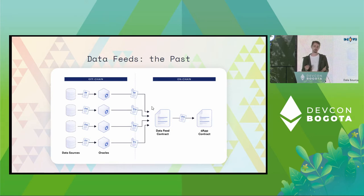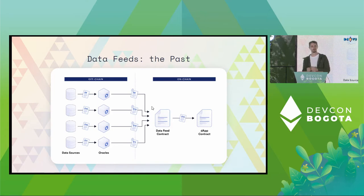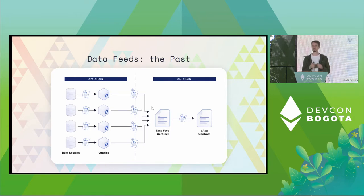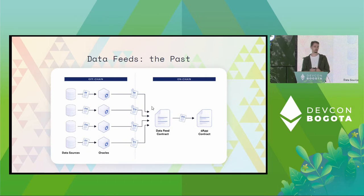If some of the oracles do not send a price, or if some of them send false data, that's okay. If they don't send a price, our data feed contract can just handle that by ignoring a certain number of missing submissions. And if they send a false price, we use the median, which ensures that as long as no more than half of the oracles are faulty, the aggregate price still lies within the interval of prices reported by correct oracles.